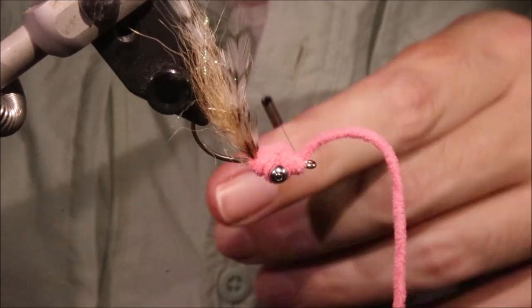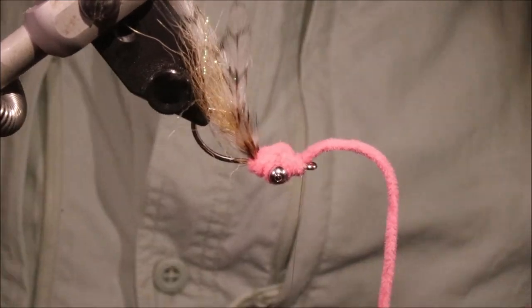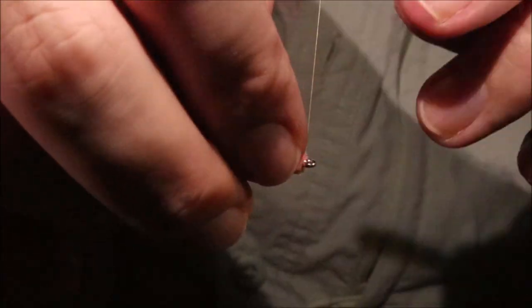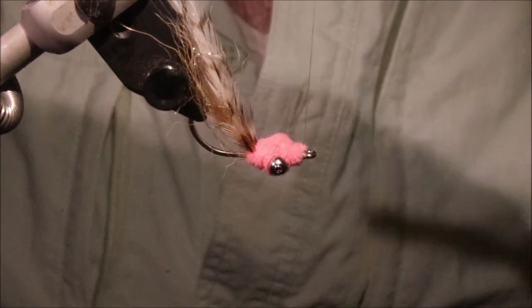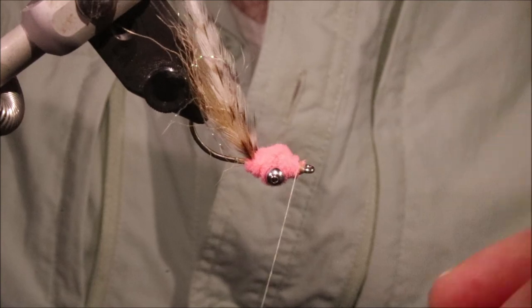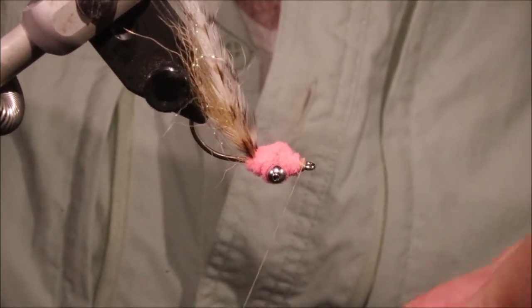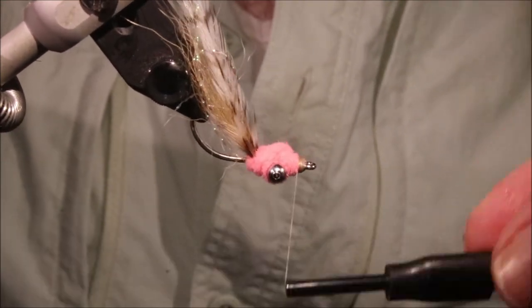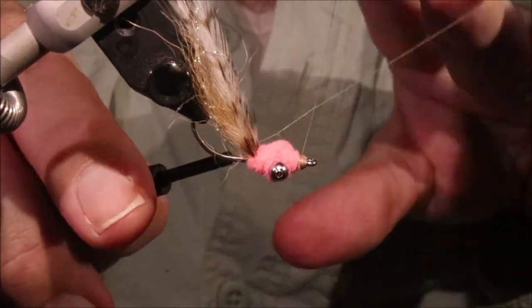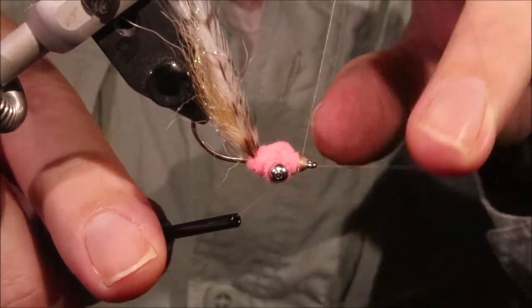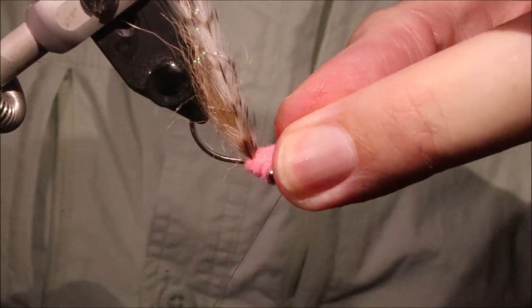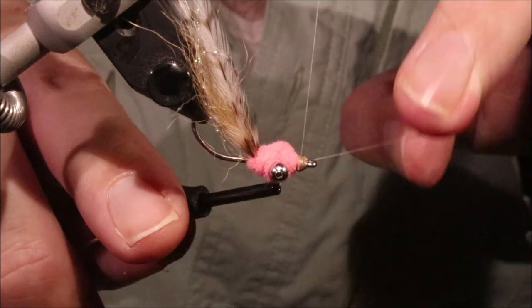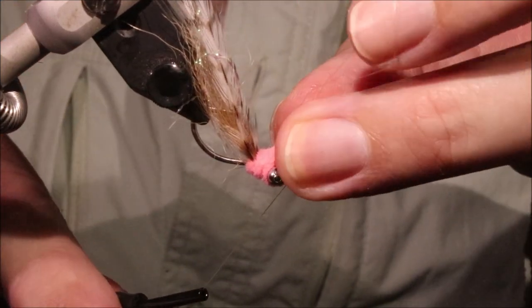I mean, you don't need to be that fussy. Turn that away tight. And then just come to the front. I'm just going to tie back, making a wee thread head. Nice and clean. And then just come in, whip finish. Nice and tight. And another.